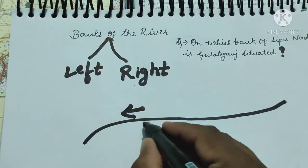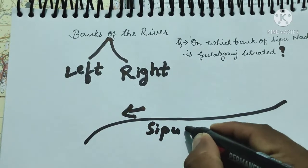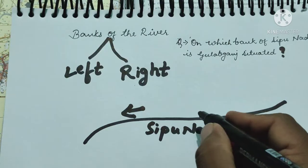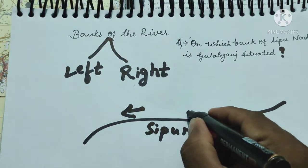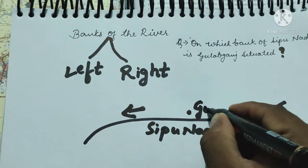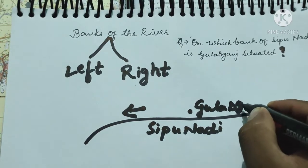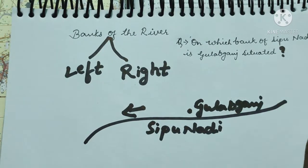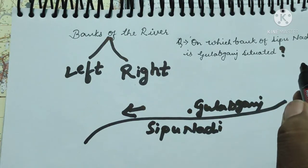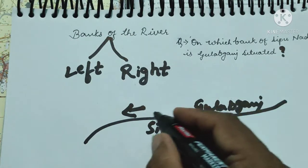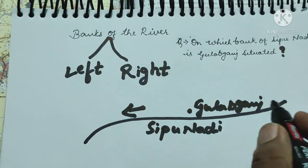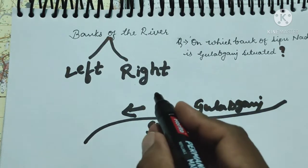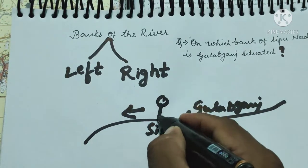For example, if this is Sipu Nadi, somewhere nearby is Gulaab Ganj. Now the question is very simple: on which bank of Sipu Nadi is Gulaab Ganj situated? First of all, we will check the river direction. If the arrow mark clearly shows the river is flowing this way, you stand facing that direction.